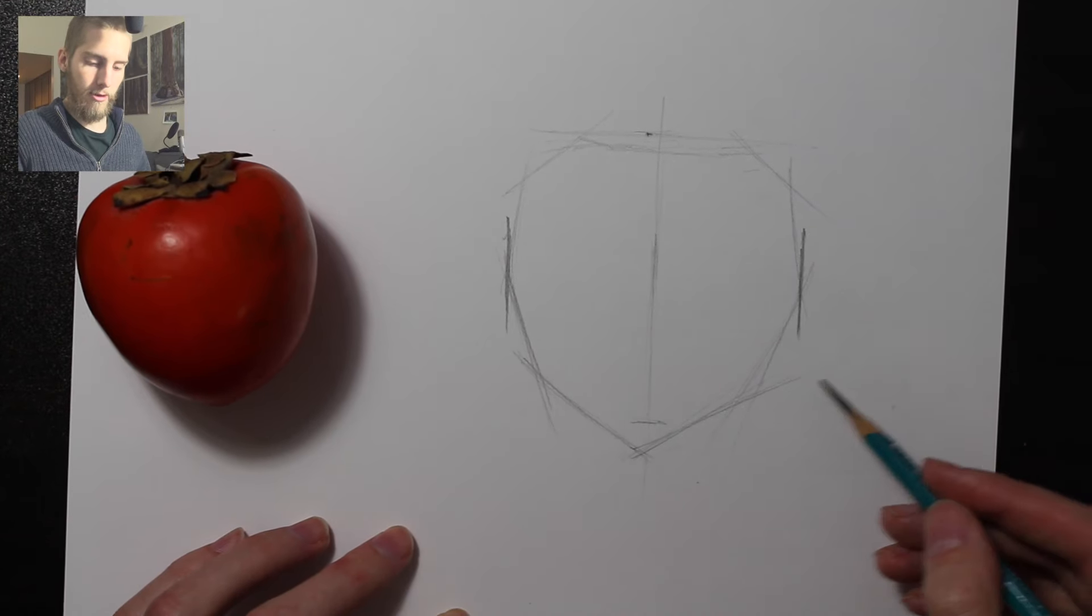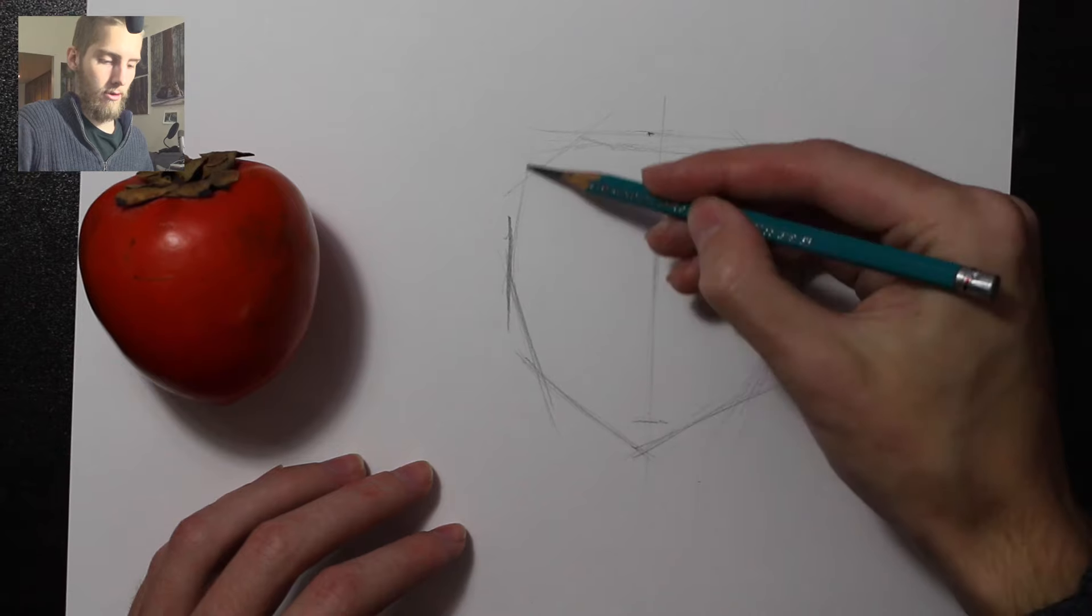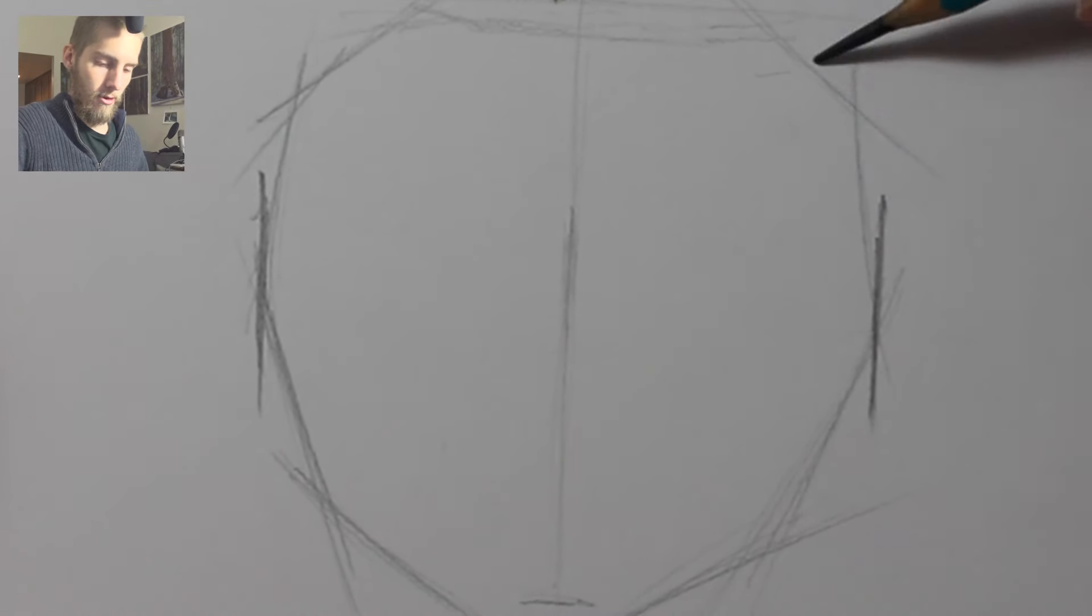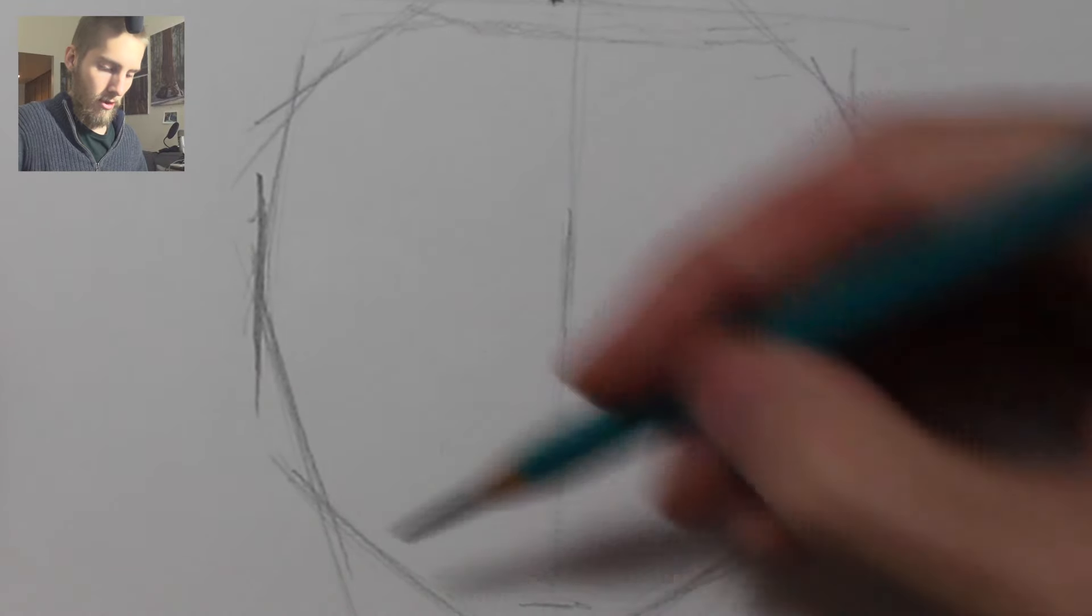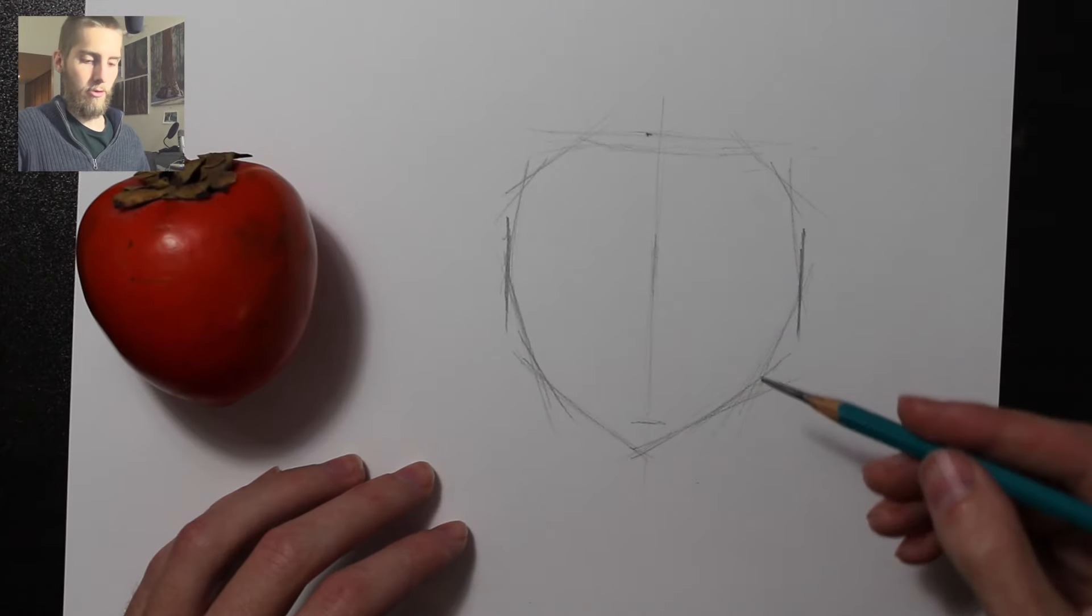And as the drawing progresses, what I'll get into in future videos is I can start using more straight lines to curve these harsh points. See how that makes it a little more curved. You're already starting to get the shape of this persimmon.